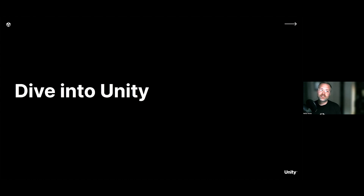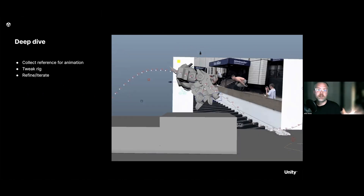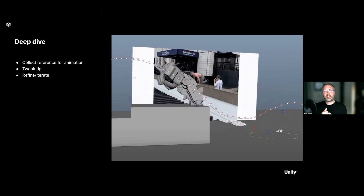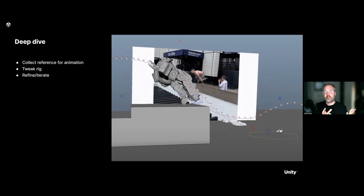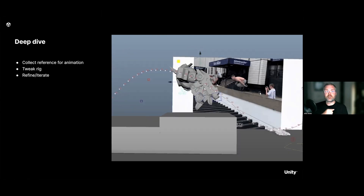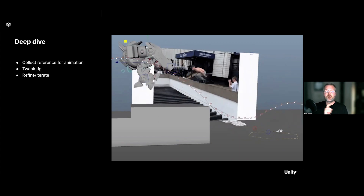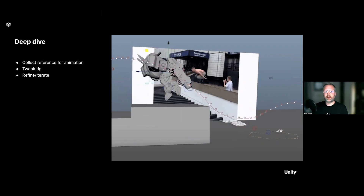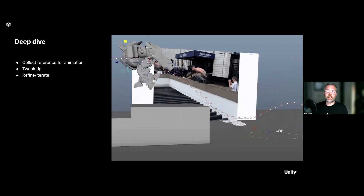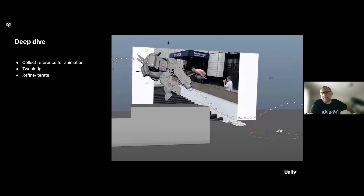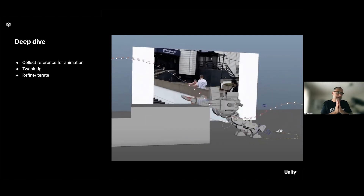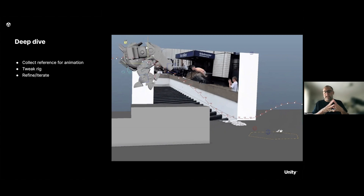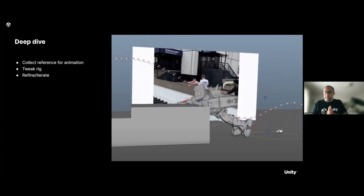Once your animation is complete, it's important to select all the attributes of the character you want to export, then export as FBX. In Maya, go to File > Export, choose FBX, and make sure you have 'Bake Animation' checked. Name the file and bring it into Unity. So now you have something that's been modeled and has animations on it — in the next video, we'll set up the Unity project and really start getting to work.